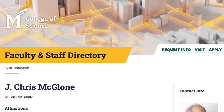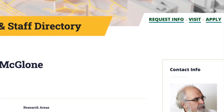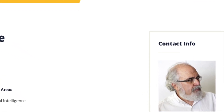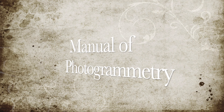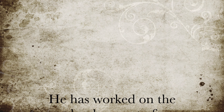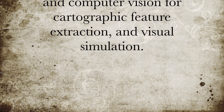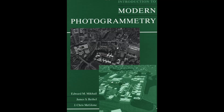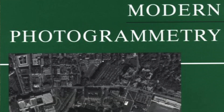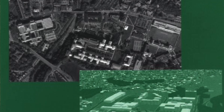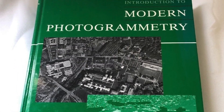After reading extensively on this subject, I decided to contact Chris McGlone, editor-in-chief of two editions of the Manual of Photogrammetry published by ASPRS. He holds a PhD in photogrammetry from Purdue University and has worked on photogrammetric instruments, computer vision for cartographic feature extraction, and visual simulation. As co-author of Introduction to Modern Photogrammetry, he could help us navigate through these stages, each representing different technological approaches to determining positions from imagery.